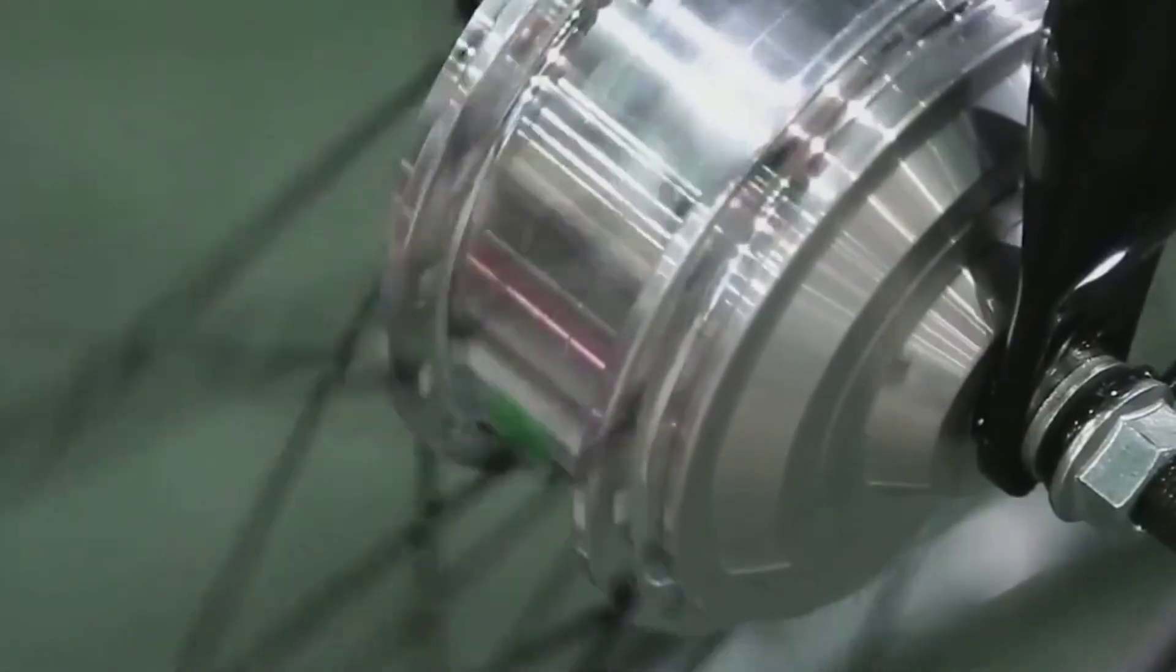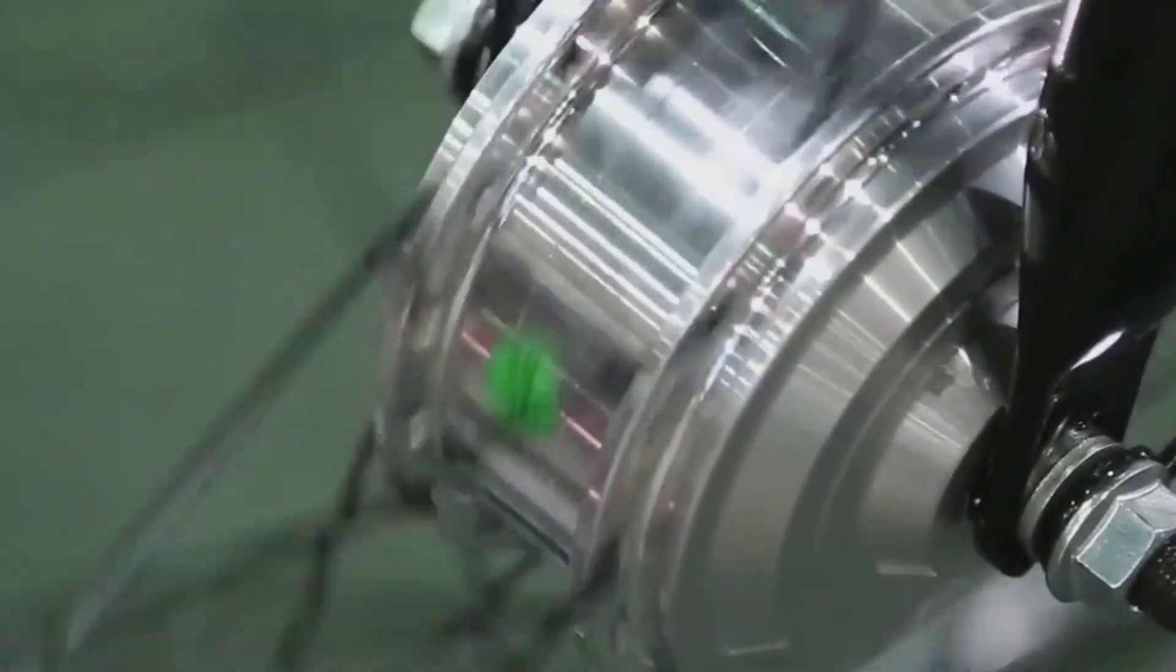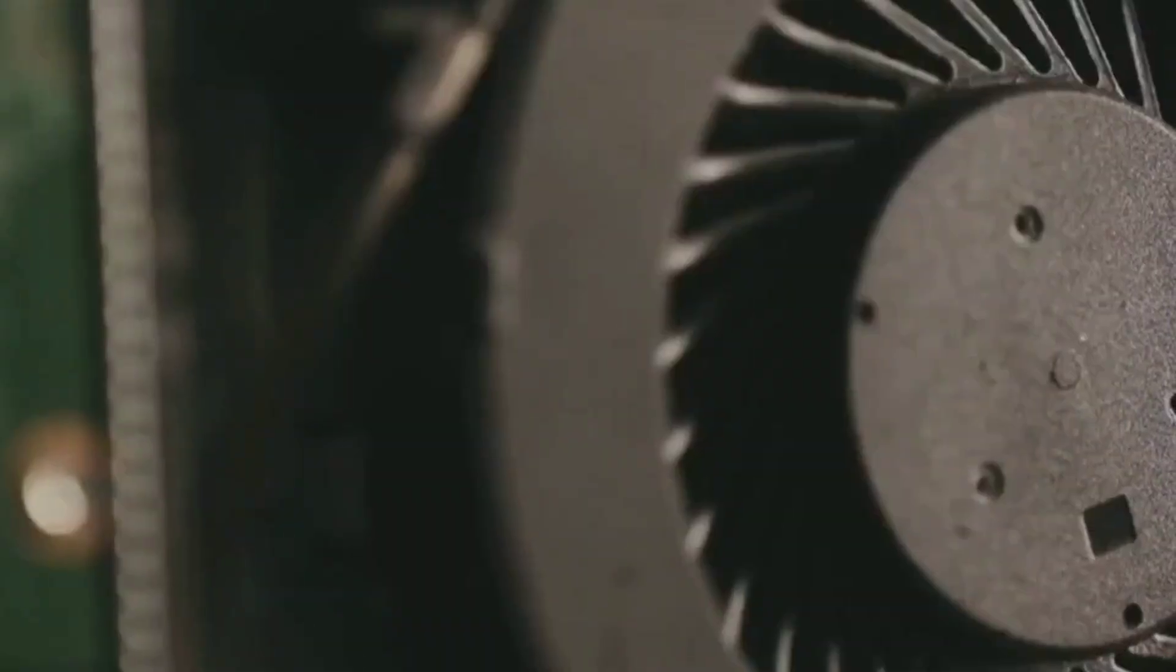Brushless motors flip the design: magnets spin, coils stay still, and an electronic controller switches the current. This makes them quieter, more efficient, and longer lasting.